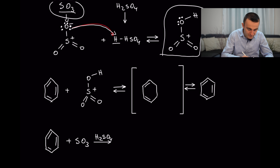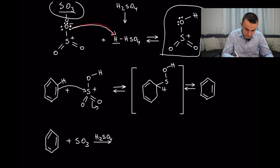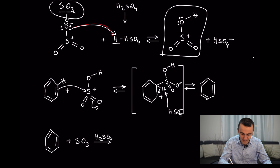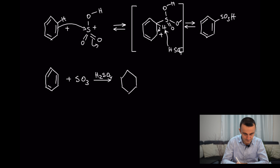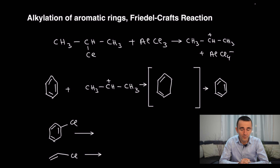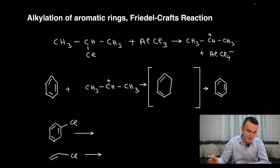Let's move to aromatic sulfonation. To perform sulfonation, you mix sulfur trioxide (SO₃) with sulfuric acid. One lone pair of oxygen takes a hydrogen from the acid to form the electrophile. This double bond attacks the electrophile, and the bond moves accordingly. Then the base abstracts the hydrogen, and the bonding pair moves to reform the double bond. The final product contains an SO₃H group — sulfonation of the aromatic ring.